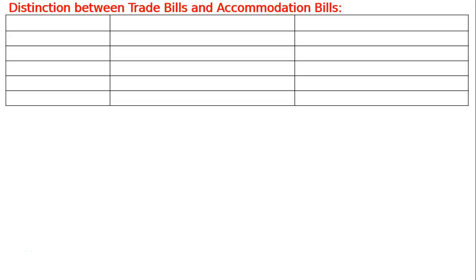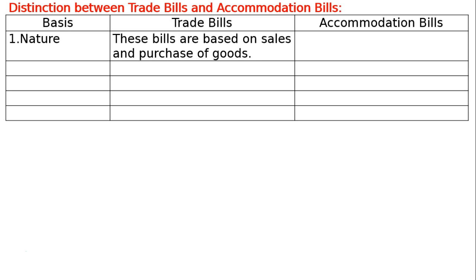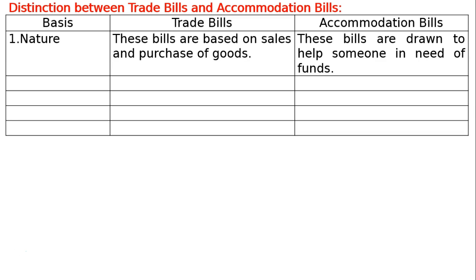Distinction between Trade Bills and Accommodation Bills. Basis 1 is Nature. In case of trade bills, these bills are based on sales and purchase of goods. In case of accommodation bills, these bills are drawn to help someone in need of funds.